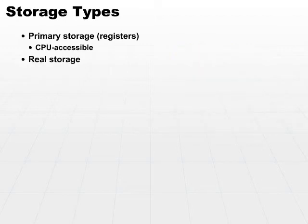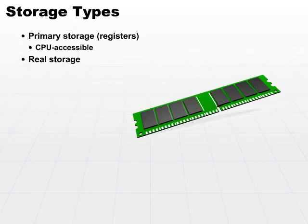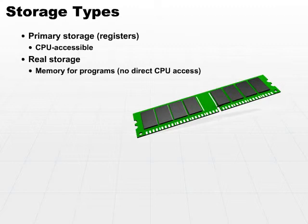Real storage is the area of memory typically referred to as RAM — the random access memory location where programs reside and where the vast majority of your data resides. The CPU does not directly access real storage. Real storage is accessed indirectly through the registers. The CPU asks for information to be pulled into the CPU cache and then perhaps directly into registers where the CPU can then operate on that data.